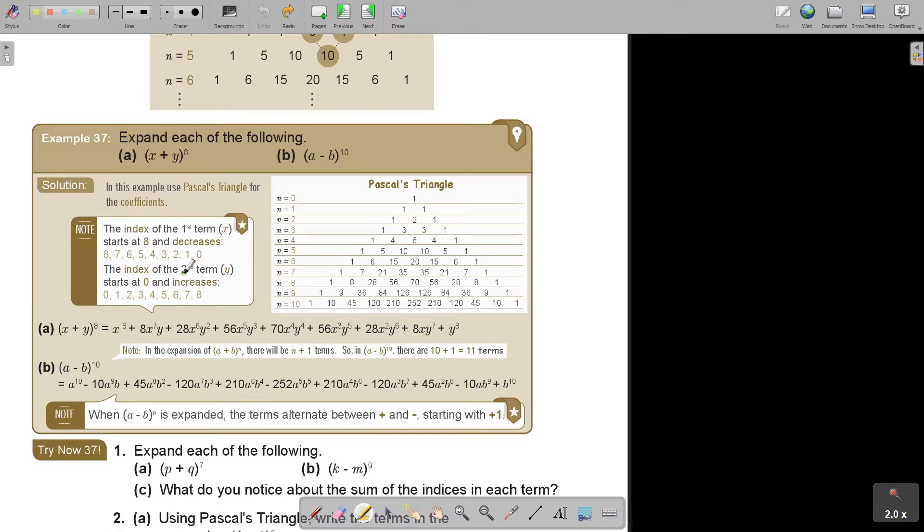Expand each of the following: (x+y)^8 and (a-b)^10. So in this example, use Pascal's triangle. Later on we will use the binomial theorem. But for now, Pascal's triangle for the coefficients. So the index of the first term X starts at 8 and decreases. So that is of the X terms: 8, 7, 6, 5, 4, 3, 2, 1 and there is no X. The index of the second term Y starts at 0. So there is no Y. And then it is 1, 2, 3, 4, 5, 6, 7 and 8.